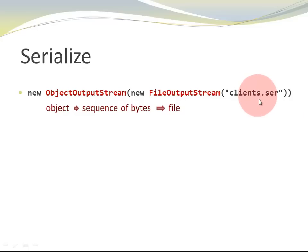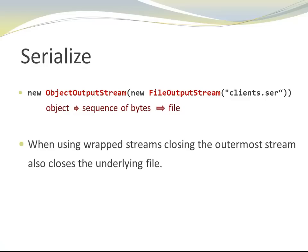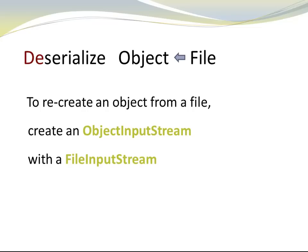When using wrapped streams, closing the outermost stream also closes the underlying file. Caveat: opening an existing file overwrites that file, so this is something we want to be conscious about. Now let's look at the opposite process — deserializing. At this point, we want to read from the file where we serialized the object before and recreate the object based on the data that was stored in that file.